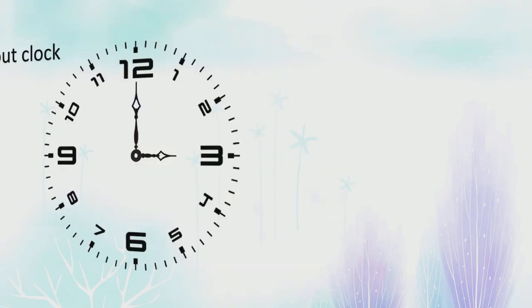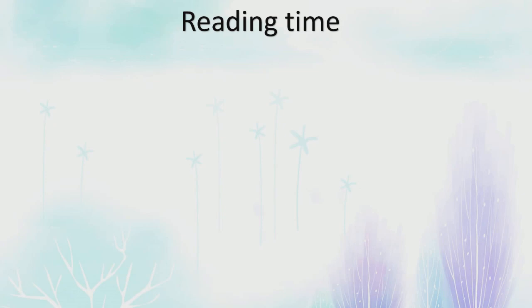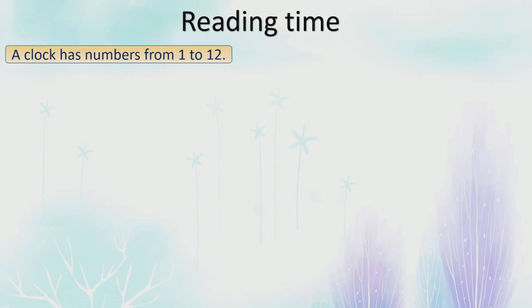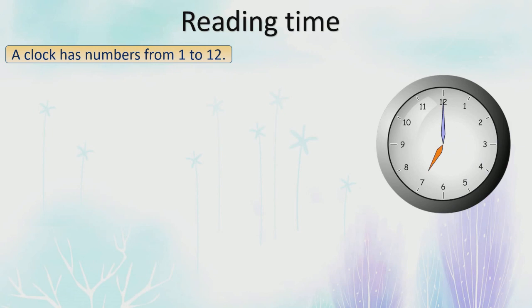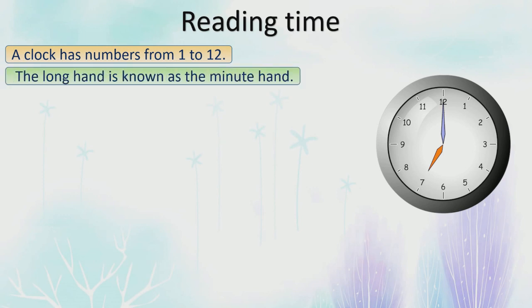One hand tells us the hours and the other hand tells us the minutes. A clock has numbers from 1 to 12. You can see two hands here — one is purple in color and one is orange in color. The long hand, which is purple, is known as the minute hand. The short hand, which is orange, is known as the hour hand.